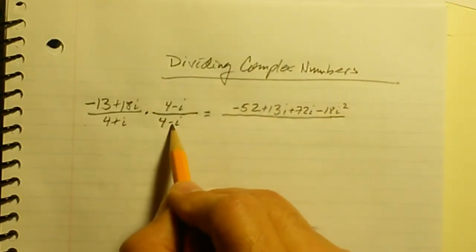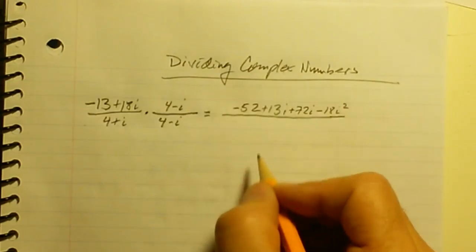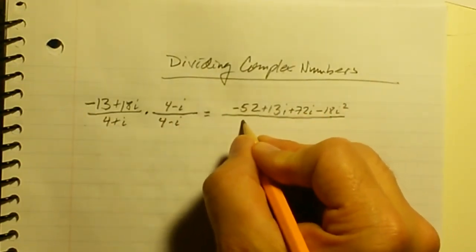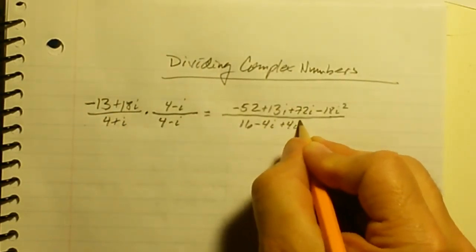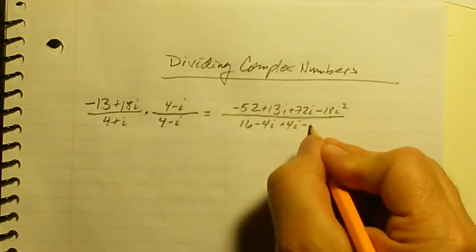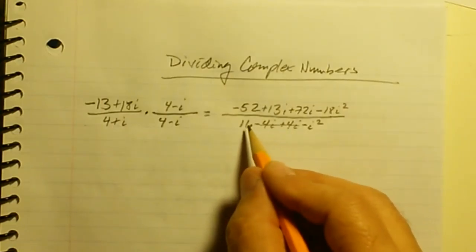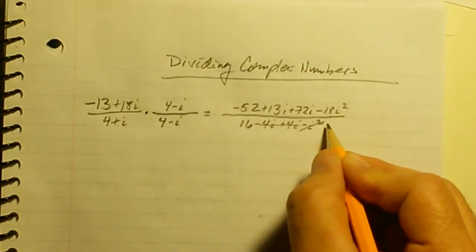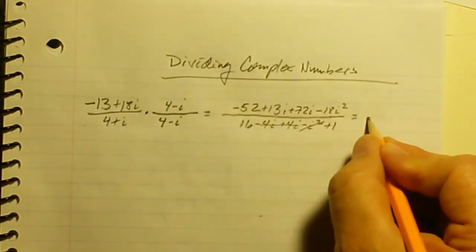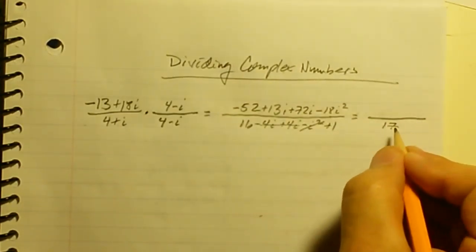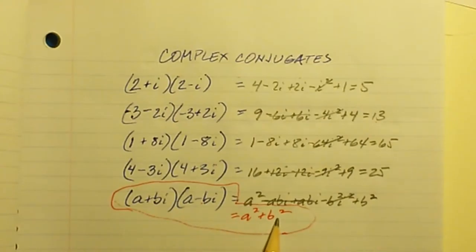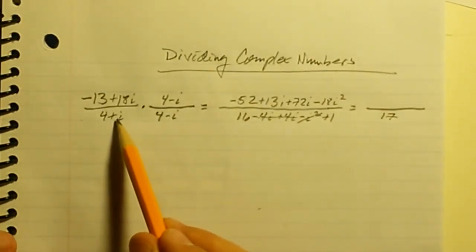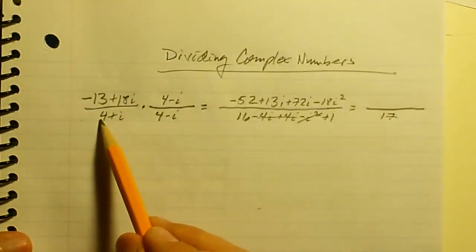For the denominator, this is a complex number times its conjugate. Multiplying it out: 4 times 4 is 16, then minus 4i and plus 4i cancel out, and minus i squared is plus 1, giving 16 plus 1, which is 17. Or using the formula with a equals 4 and b equals 1: 4 squared plus 1 squared equals 16 plus 1, which is 17.